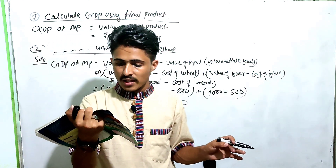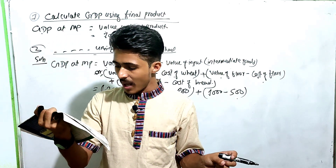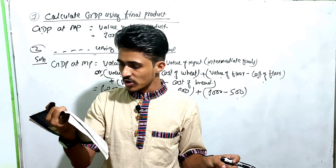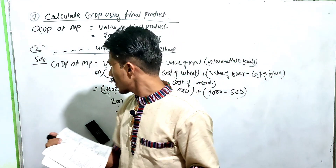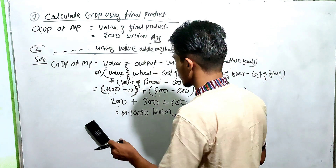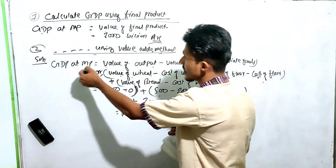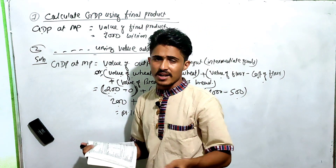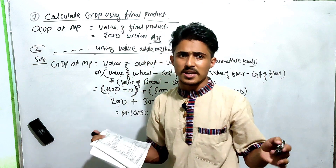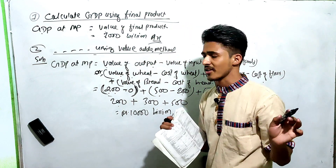The product method is easy to apply. Now, if you have confusion about GDP, GNP, and NNP, GDP, GNP, NNP, NI, and PI are all related national income aggregates.